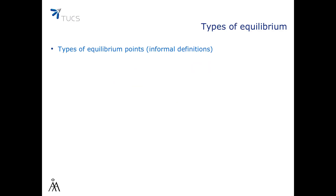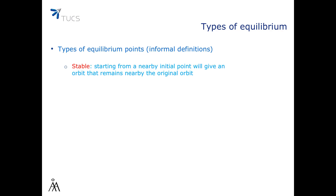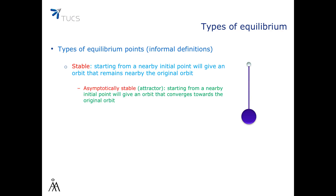I will give here just an informal definition of the main types of equilibrium points. Remember that if we start the dynamical system exactly in the equilibrium point, then the whole sequence is constant and equal to the equilibrium point. We say that the equilibrium point is stable if starting from a nearby initial point will give an orbit that remains nearby the original orbit. A special form of stability is that of asymptotic stability, where starting nearby the equilibrium point ensures that the dynamical system converges towards it. A typical example is that of a pendulum in the lowest position — if we slightly move the pendulum from this position, it will eventually return to the same position.